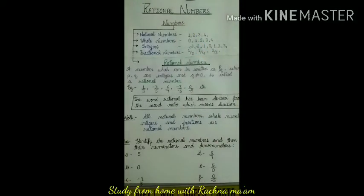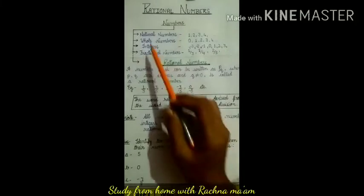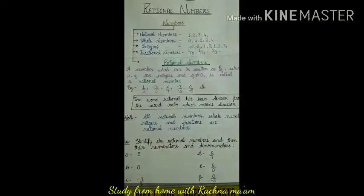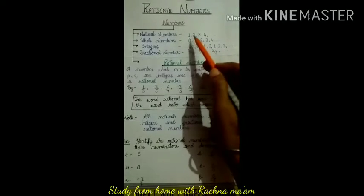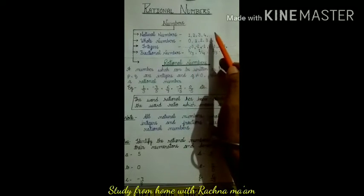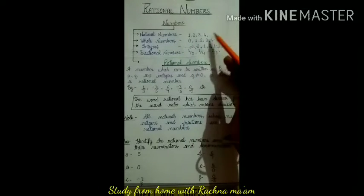Firstly, I want to introduce you about numbers. Numbers, how many types are there? The first one is Natural Numbers. If we talk about earlier classes, we have already studied Natural Numbers. Natural Numbers, which we also call counting numbers — like 1, 2, 3, 4, 5, 6, and so on.